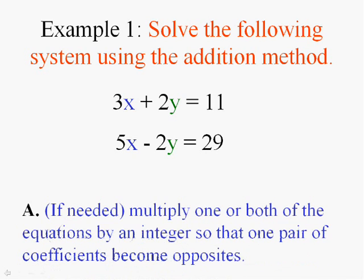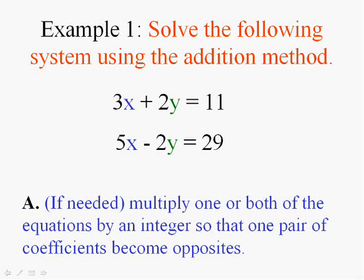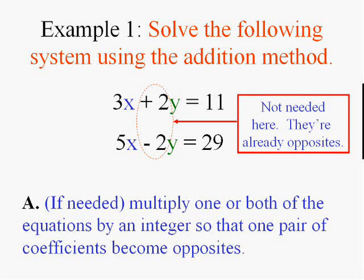Let's try one. Step one is to multiply either equation or both equations by whatever it takes to have opposites. Now I'm starting you off with an easy one. We don't need to multiply anything. We already have opposites. If you look at the y's, you have a plus 2y and a minus 2y.